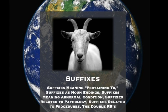Here are some suffix examples. The suffix -ac means pertaining to; cardi/cardio means heart, so cardiac means pertaining to the heart. The suffix -um creates a noun; crani/cranio means skull, giving us cranium. The suffix -osis means abnormal condition: gastr/gastro means stomach, so gastrosis means abnormal condition of the stomach.